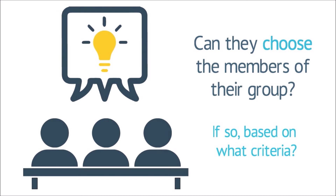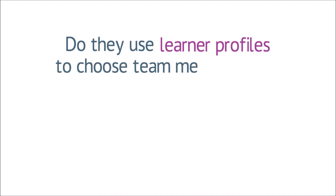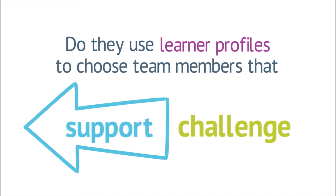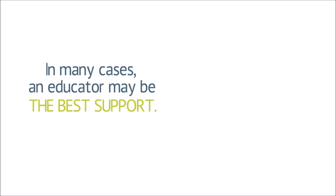Similar interests? Opposite or complementary skill sets? Do they understand enough about their learner profile, and that of their peers, to make educated choices about who can best support or challenge them in completing the task? Or in this situation, is the educator the best support?